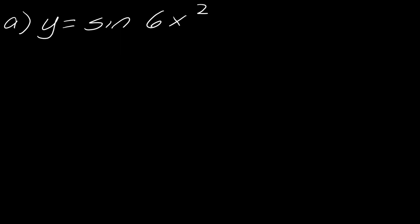Starting with this first one, I'm going to take the first derivative first. Looking at this function, the thing with the chain rule is you always want to identify the outermost function, which in this case would be sine, and then the innermost function, which would be 6x squared.